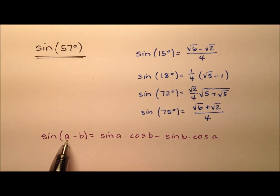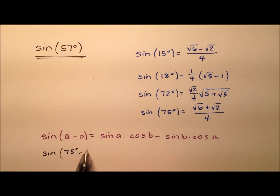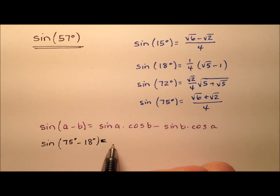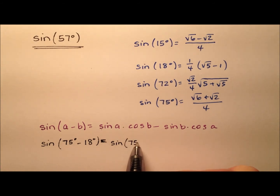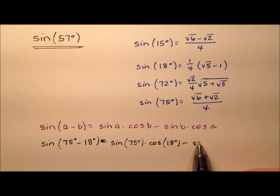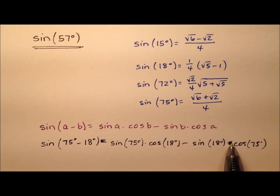So let's get started. We need two angles, a and b, that when subtracted give 57 degrees. I'm going to use the sine of 75 degrees minus 18 degrees. 75 minus 18 does make 57, so we expand this out and it becomes the sine of 75 degrees times the cosine of 18 degrees, minus the sine of 18 degrees times the cosine of 75 degrees.